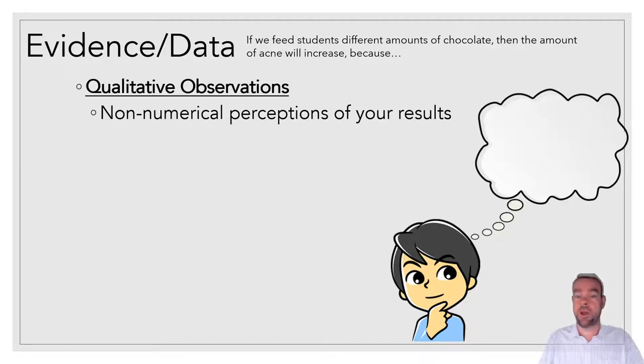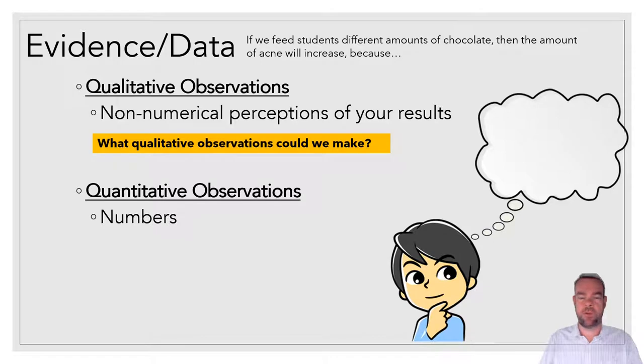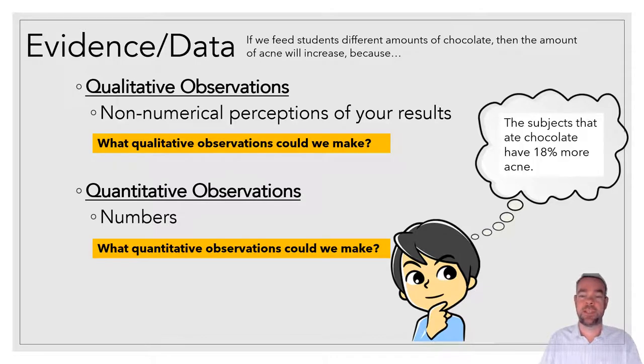Well, how do you measure acne? You can do it as a non-numerical perception. It's called a qualitative observation. But that's just you saying, hey, you know what? They seem to have more acne. But that's not really great data. Better data is numerical data, quantitative data. That would be saying something like the subjects that ate chocolate have 18% more acne.